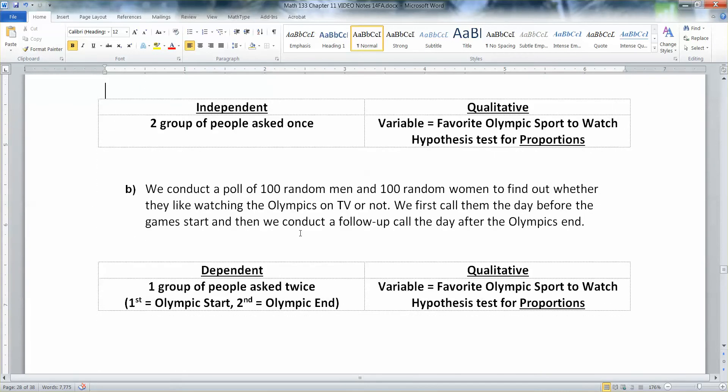Now what about we conduct a poll of 100 random men and 100 random women to find out whether they like watching the Olympics on TV or not? We first call them the day before the games start. Then we conduct a follow-up call the day after the Olympics end. Well, that would be dependent. You're asking them once at the beginning, what's your favorite sport, and at the end.